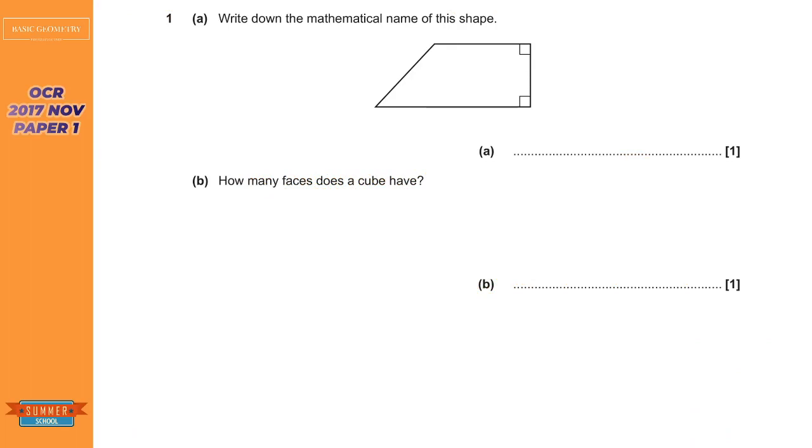So first question is provided by OCR and it says what's the name of this shape. You might be tempted to say it's a quadrilateral, which it is, but I think that this question probably wants us to be a little bit more specific.